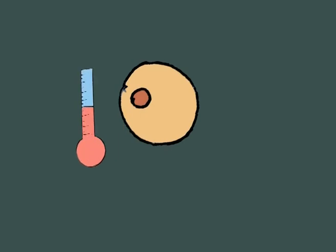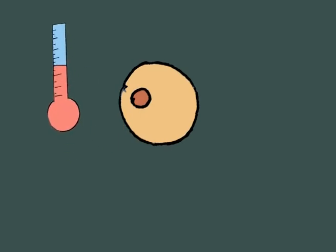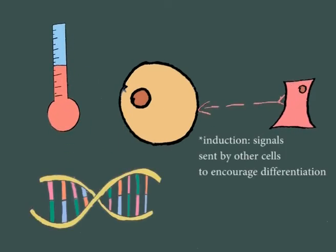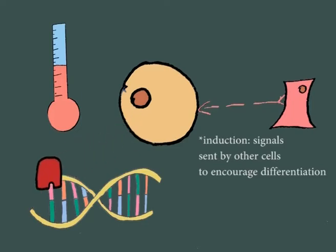The environment in which the cells mature, induction, or transcription factors — proteins that will encourage or hinder the binding of RNA polymerase to the genes — will trigger their expression.